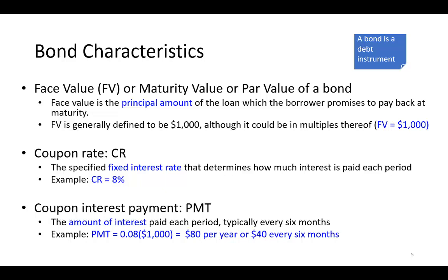The debt itself has a face value, also called maturity value, also called par value. This is the principal amount that the borrower borrows from you and promises to pay back at maturity. The face value of a bond is generally defined to be a thousand dollars, although in reality it could be in multiples thereof. We're going to use FV to denote the face value of a bond, which, since it's going to be given back to you at maturity, also represents the future value of that bond.